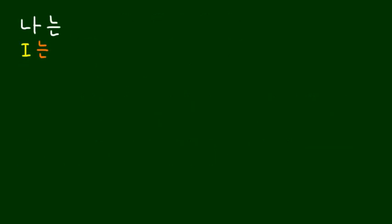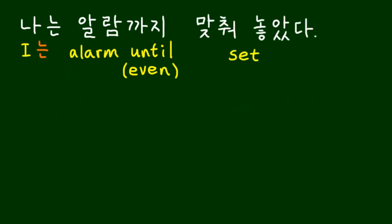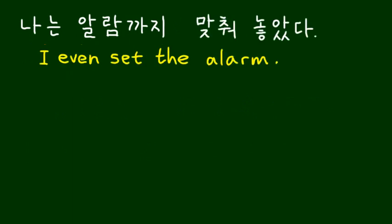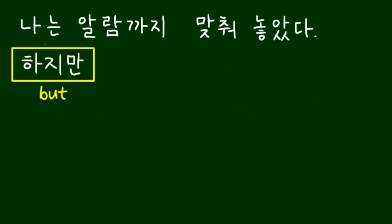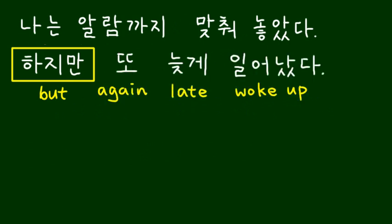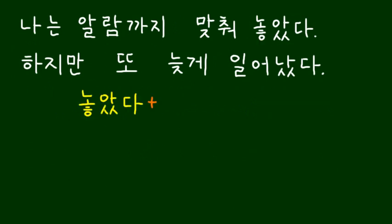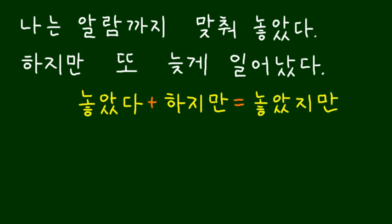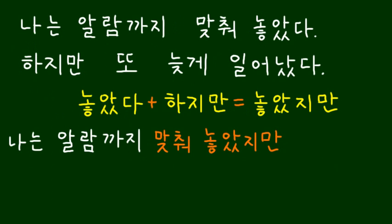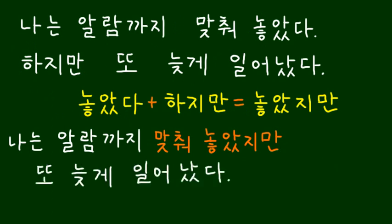나는 알람까지 맞춰 놓았다. 하지만 또 늦게 일어났다. 놓았다 and 하지만 → 놓았지만. 나는 알람까지 맞춰 놓았지만 또 늦게 일어났다.